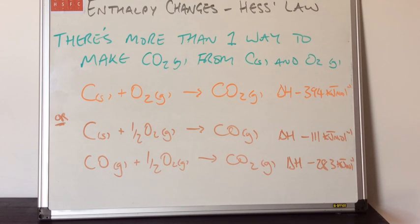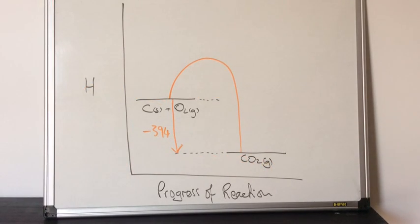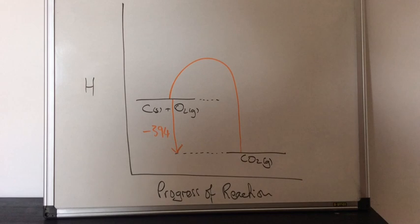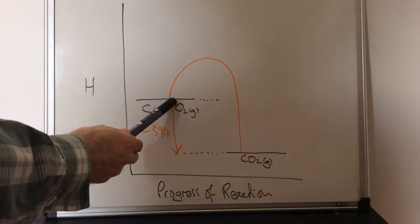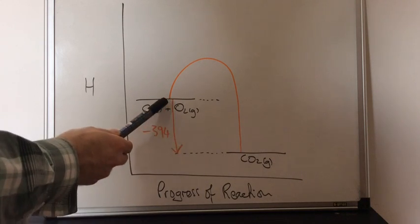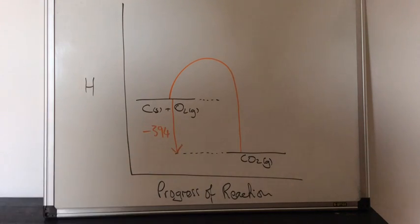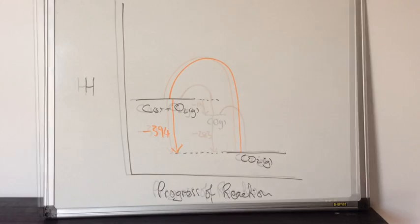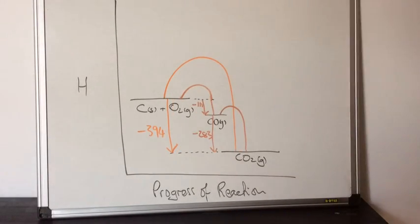Hopefully you can see that this orange enthalpy change is equal to the sum of the brown enthalpy changes. The important thing to remember is that both of these routes start and finish at the same point. If we look at the enthalpy profile diagram for the orange route, you can see the reactants are higher in enthalpy than the product.